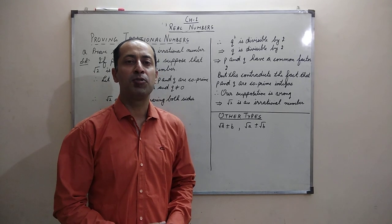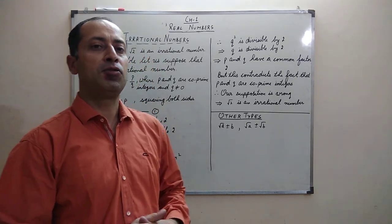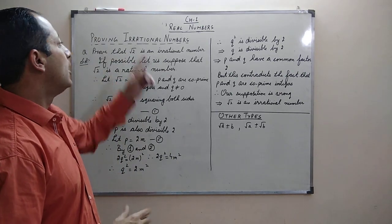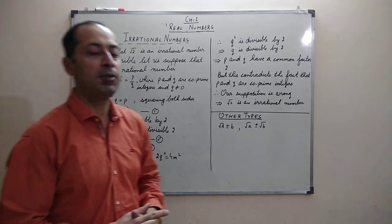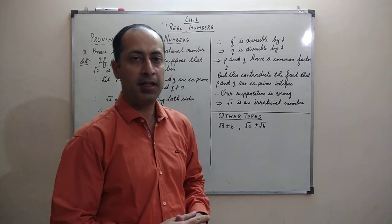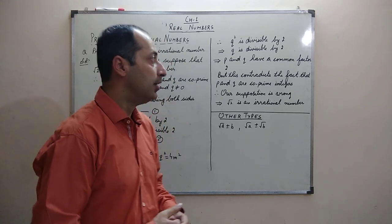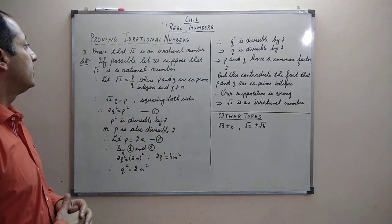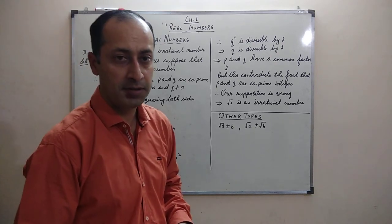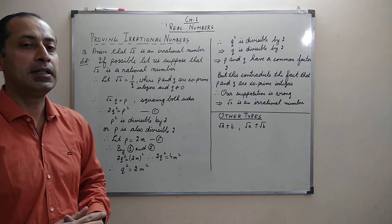Hello friends, welcome to the third lecture of real numbers. Today we are going to discuss how to prove that a particular number is an irrational number. The question I have written is: prove that root 2 is an irrational number.